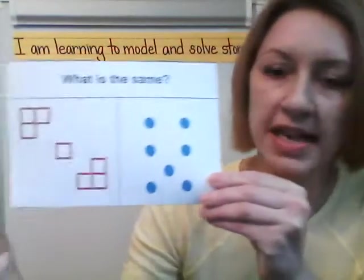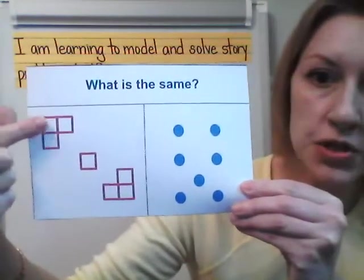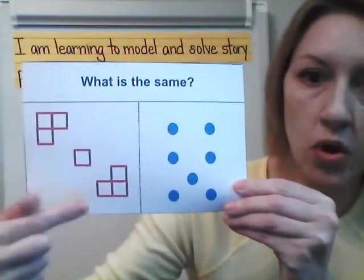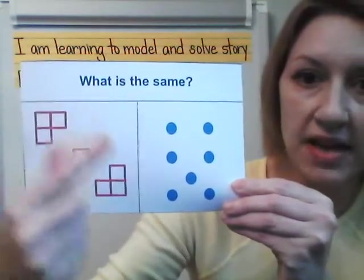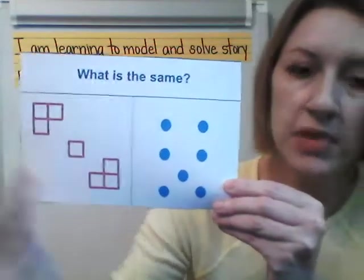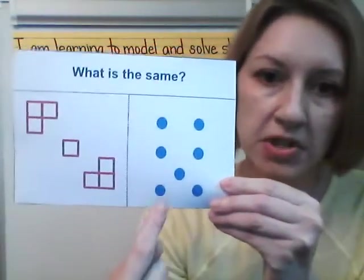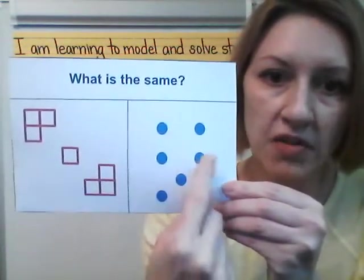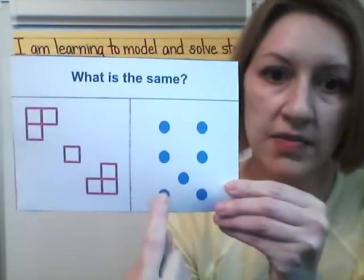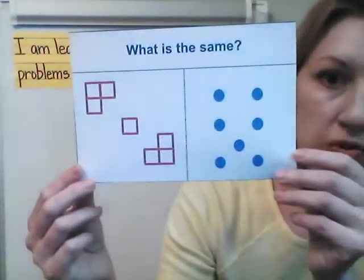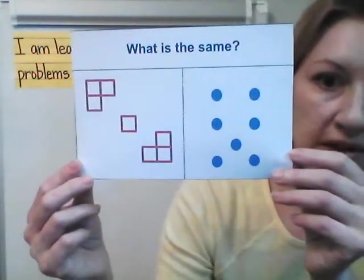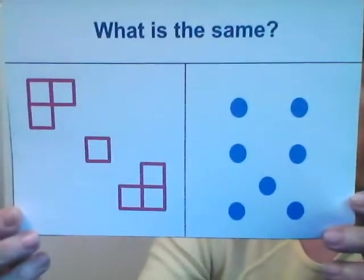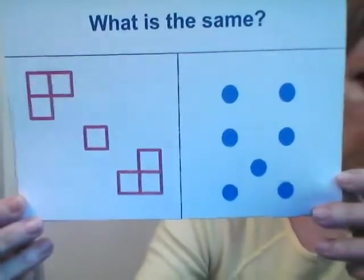Let's count it. We have one, two, three, four, five, six, seven over here. Let's look at the blue dots — one, two, three, four, five, six, seven. So they both do have seven, set up in different ways. Nice job, boys and girls.